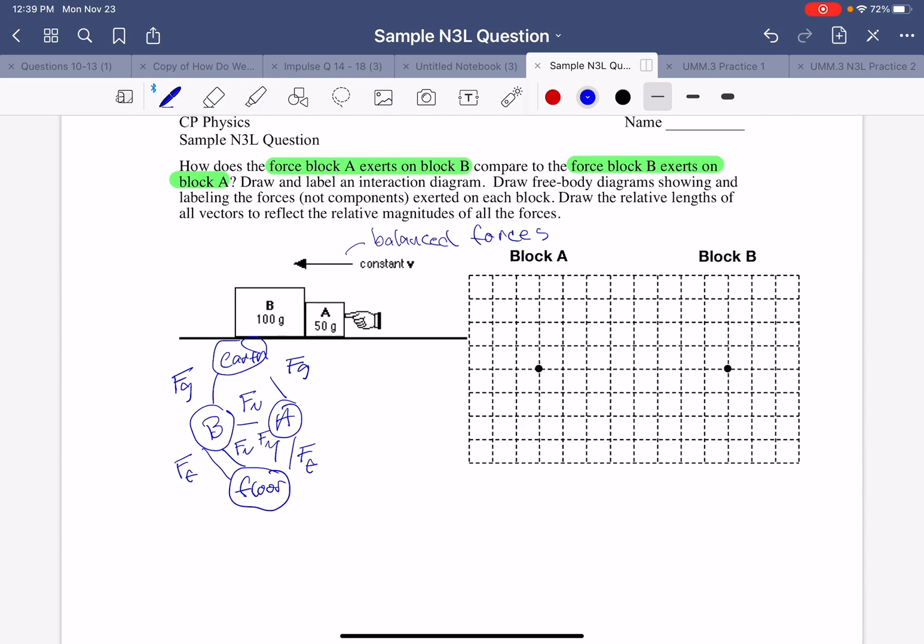Now I'm going to draw the free body diagram. And I put this grid so you can put the size of the forces exactly how they need to be. So let's do block B first, because it only has four forces acting on it. And that will make it a little easier.